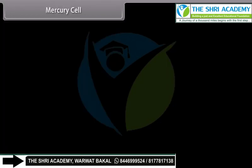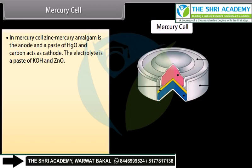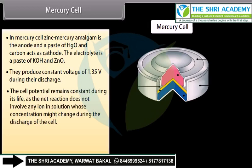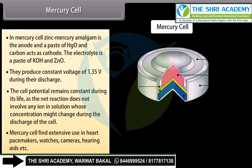In the mercury cell, zinc-mercury amalgam is the anode and a paste of HgO and carbon acts as the cathode. The electrolyte is a paste of KOH and ZnO. They produce a constant voltage of 1.35 volts during their discharge. The cell potential remains constant during its life as the net reaction does not involve any ion in solution whose concentration might change during discharge. Mercury cells find extensive use in heart pacemakers, watches, cameras, and hearing aids.